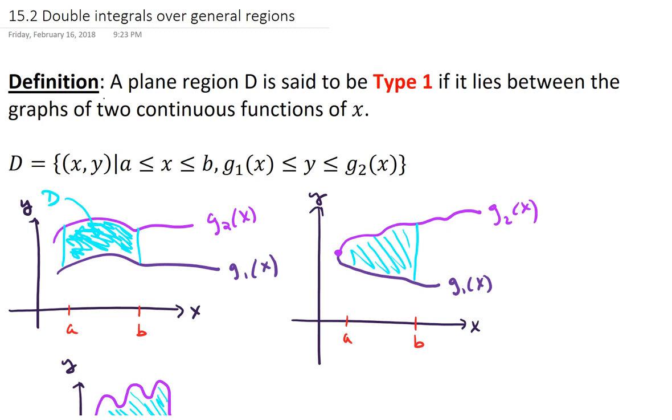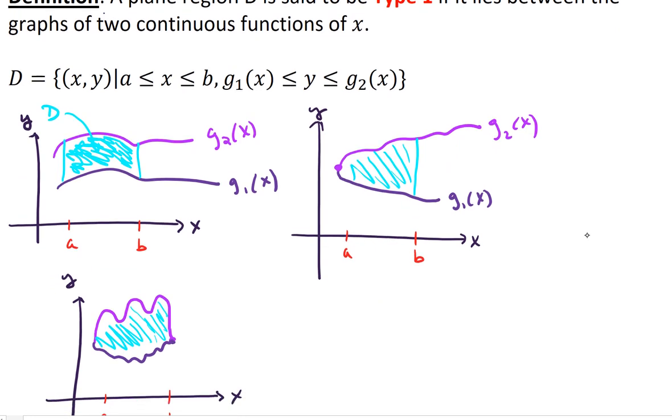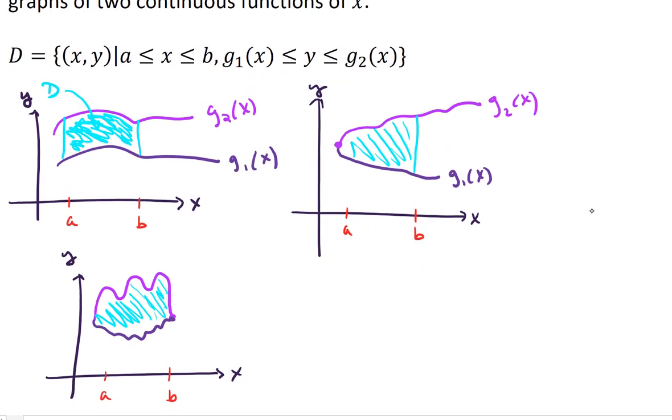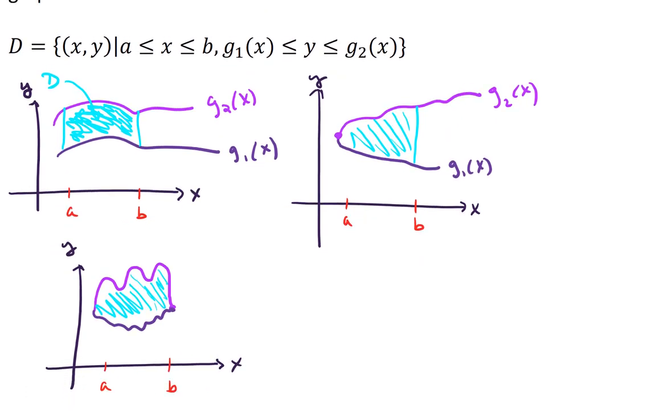So I'd like to show you the pictures first and then we'll talk about this notation for set D. The idea is that the X bounds for the region are real numbers, just real numbers A and B. But the bounds for the Y coordinates are two functions. They're functions of X, right? They pass the vertical line test. If we put the vertical line test here we would see it only crosses the function once.